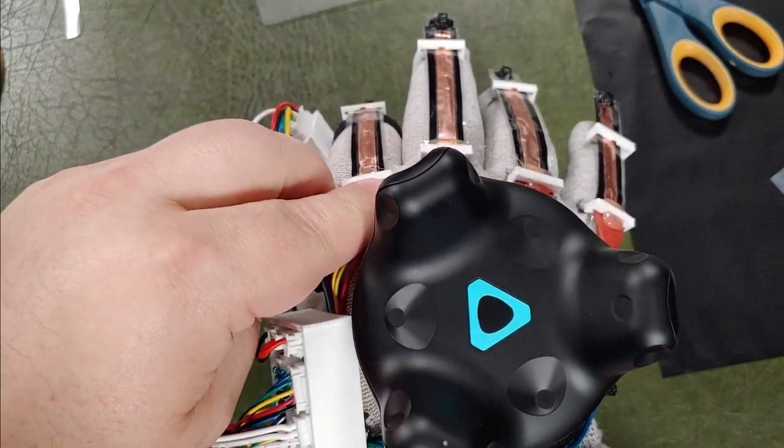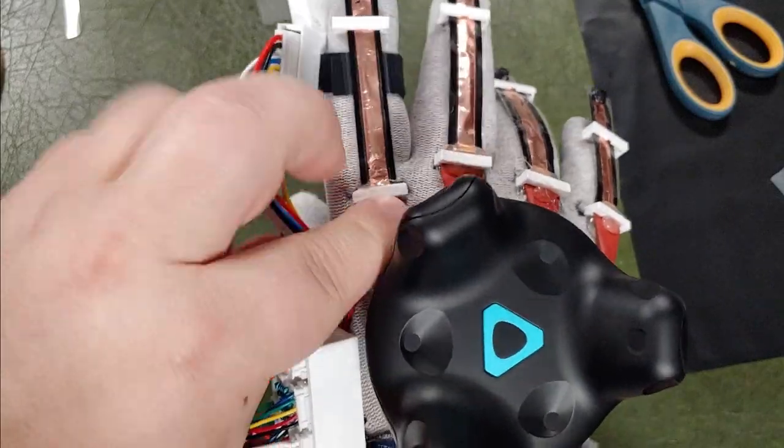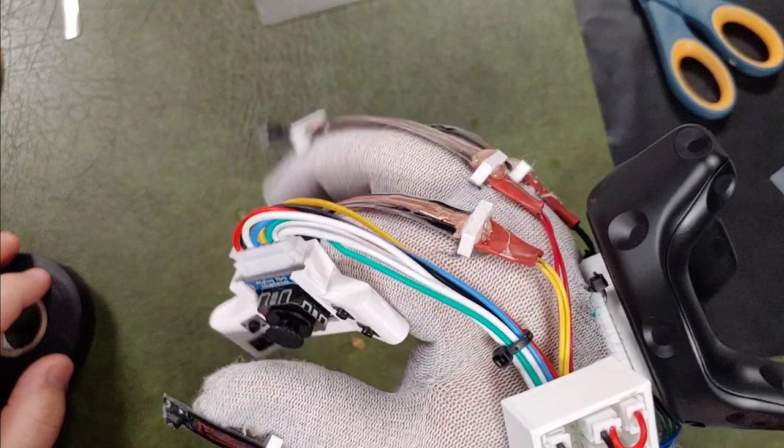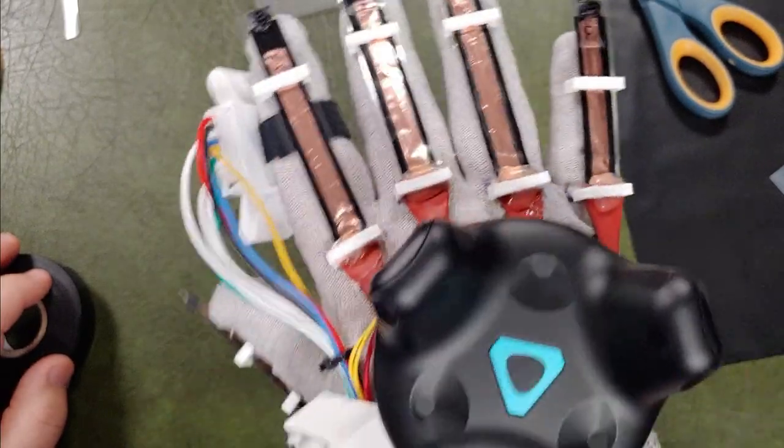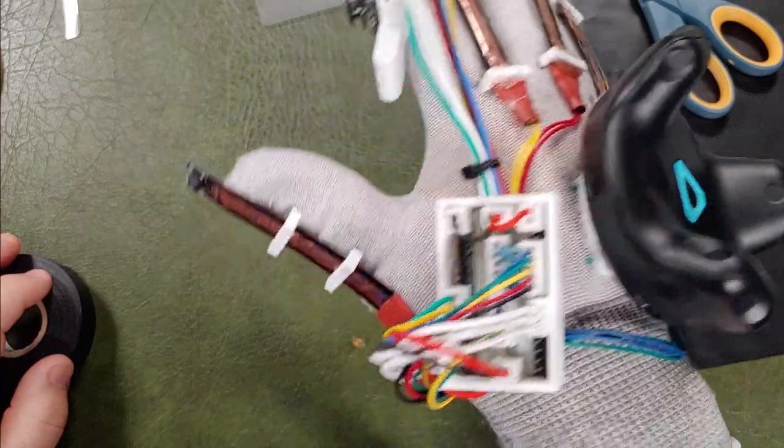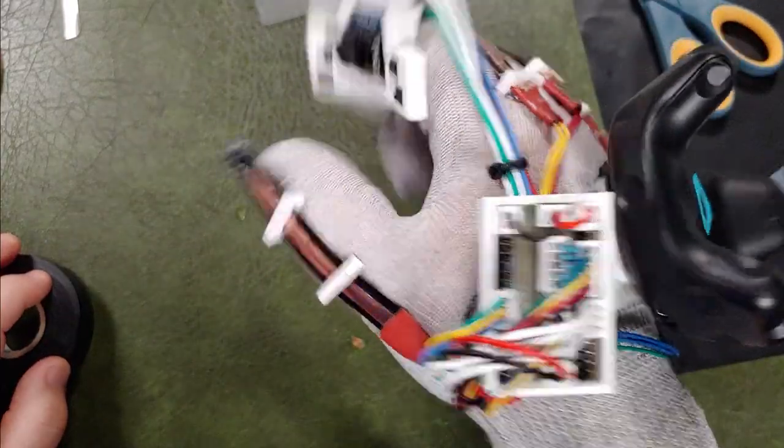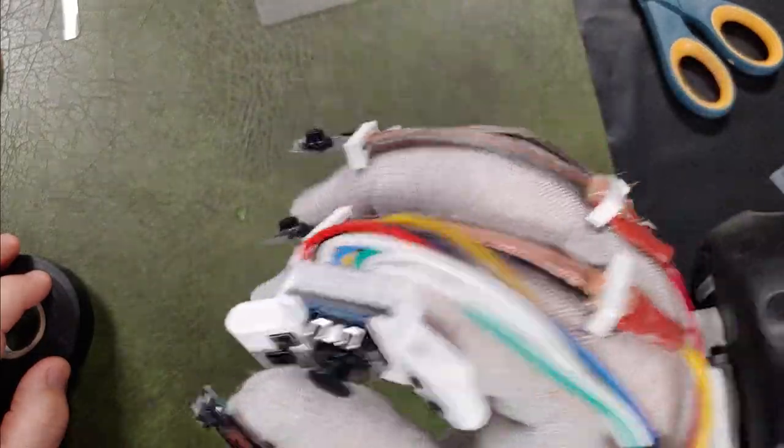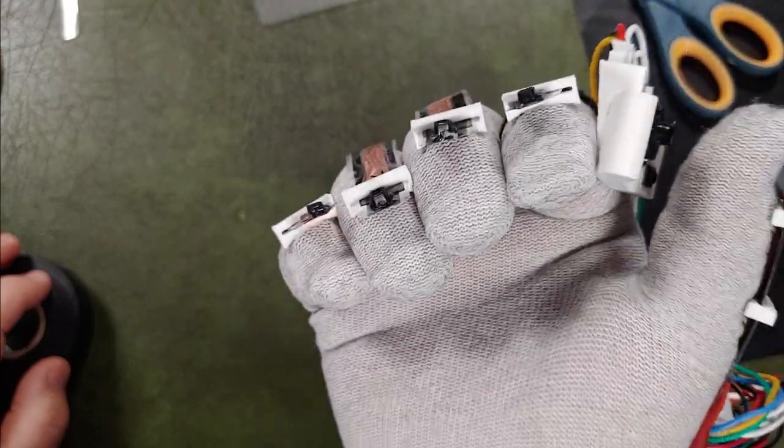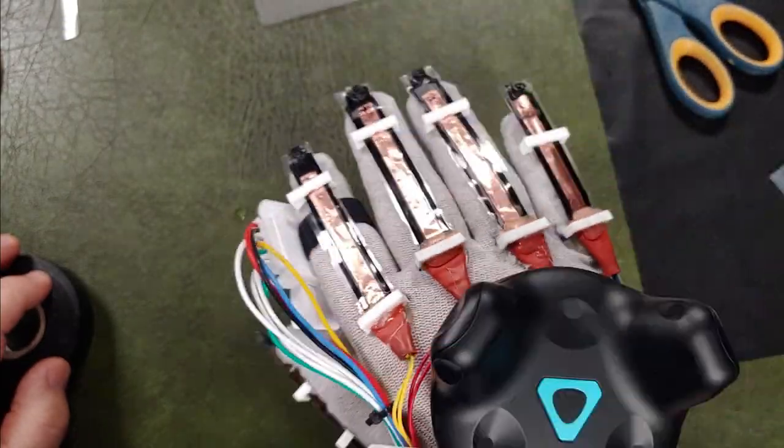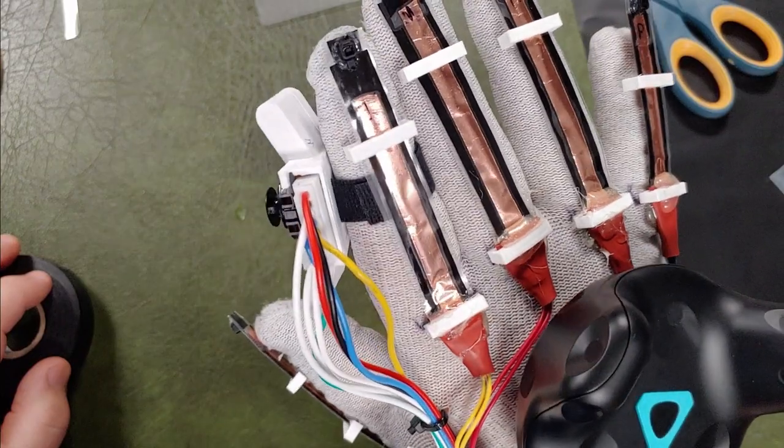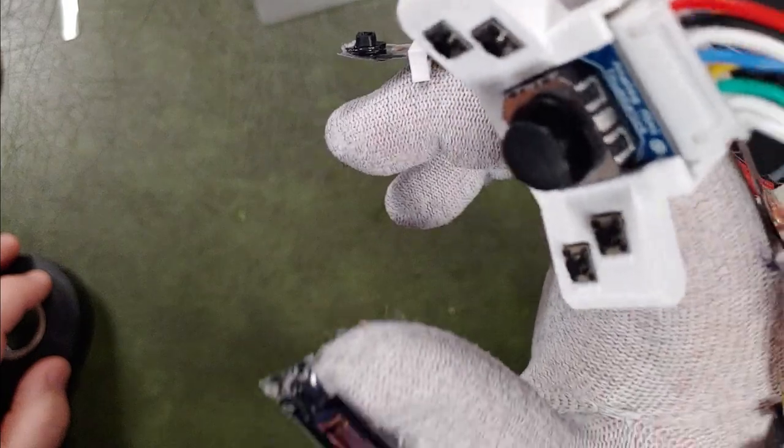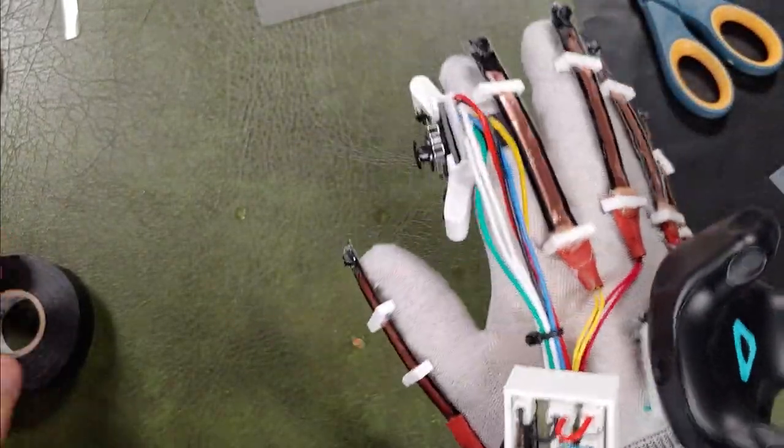And I'll leave a link to STL files to print these little guides. But really they're just a channel for the Velostat to slide through. You can use whatever your imagination comes up with to reproduce this. Thanks and good luck.